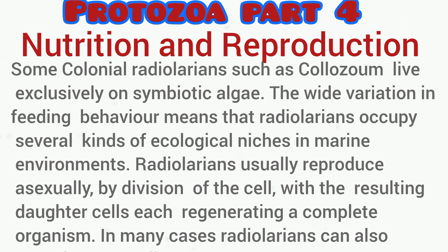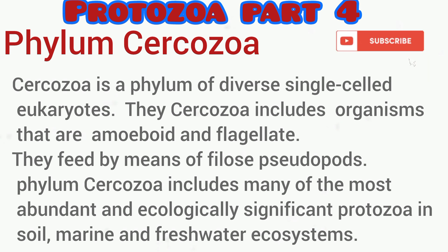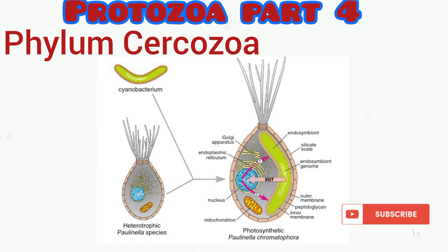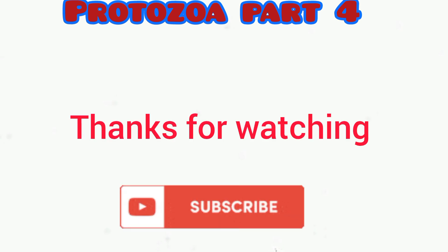The last phylum is Cercozoa. Cercozoans are diverse single-cell eukaryotes that include both amoeboid and flagellate forms. They possess pseudopodia of the filose type and inhabit various environments including soil, marine environments, and freshwater ecosystems. This is the end of this lecture. In part five of the protozoa series — the last — we'll be taking a look at the clade Excavata. Thanks for watching, please subscribe to support this channel.